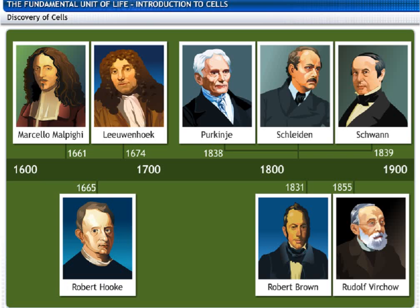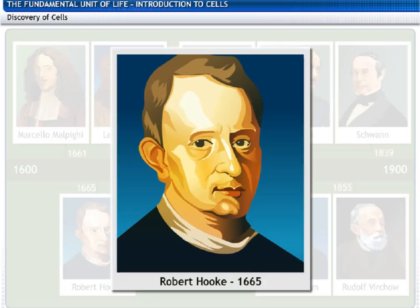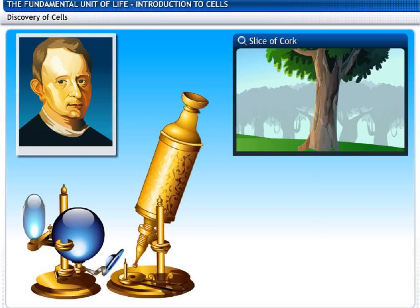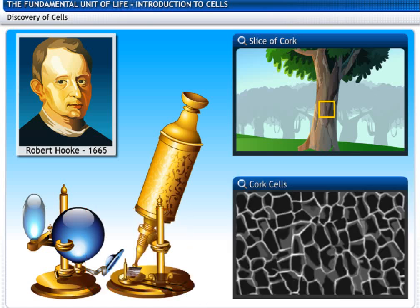In 1665, Robert Hooke, an English scientist, looked at a thin slice of cork through a compound microscope. He observed many tiny, hollow, room-like structures that resembled a honeycomb and called them cells. Hooke actually saw only the outer cell walls because cork cells are not alive.